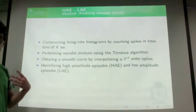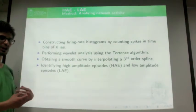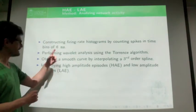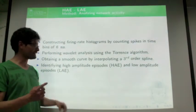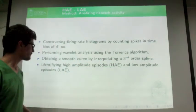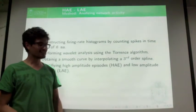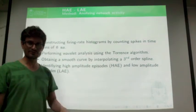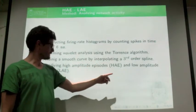Here is how they analyze the data. First, they construct firing rate histograms for counting spikes in time, using a bin of six milliseconds — chosen to ensure only one spike is counted per bin. Second, they perform a wavelet analysis using Torrence's algorithm. Then they obtain a smooth curve by interpolating a third-order spline. Finally, they identify high-amplitude episodes (HAE) and low-amplitude episodes (LAE) by establishing a threshold.